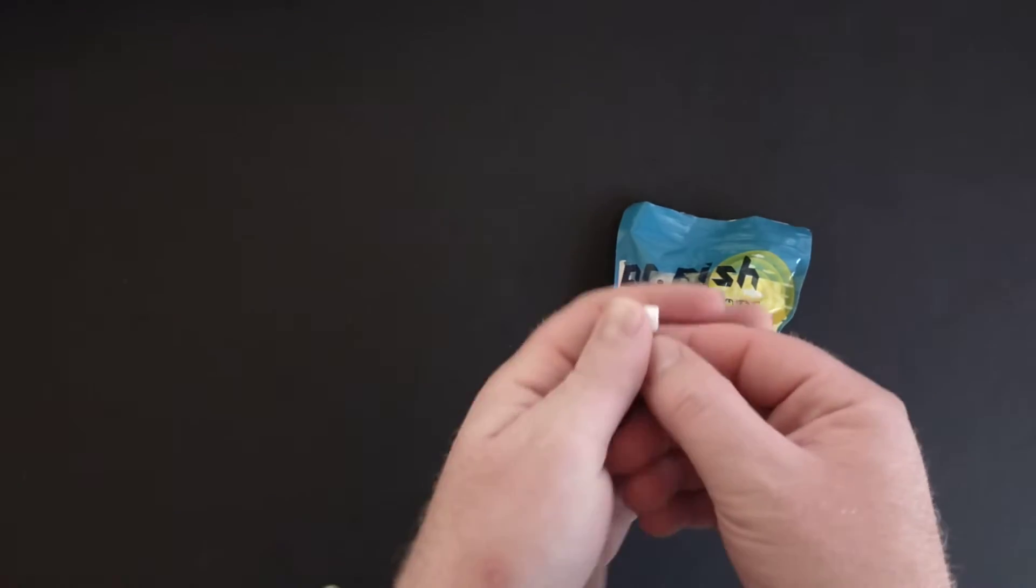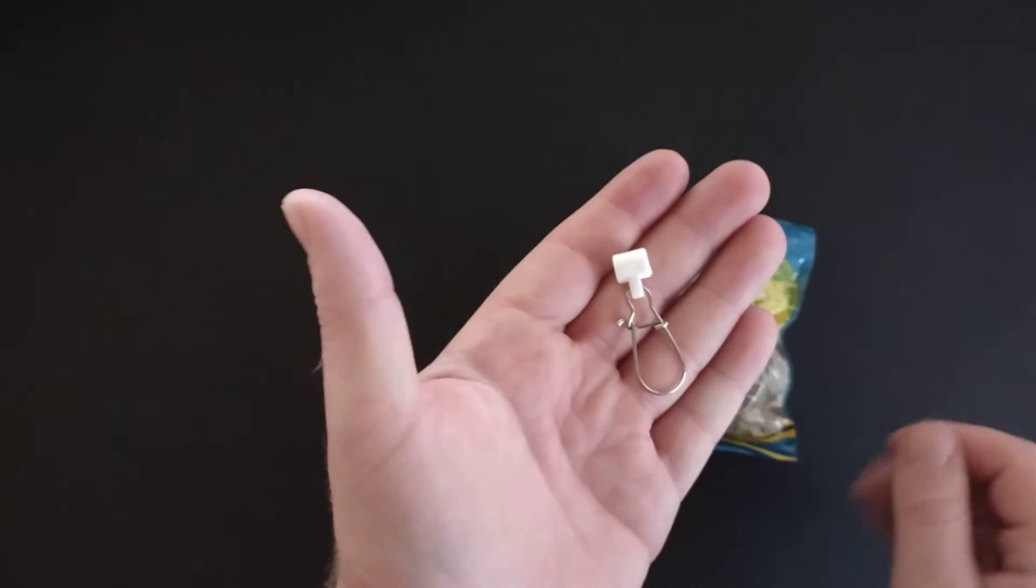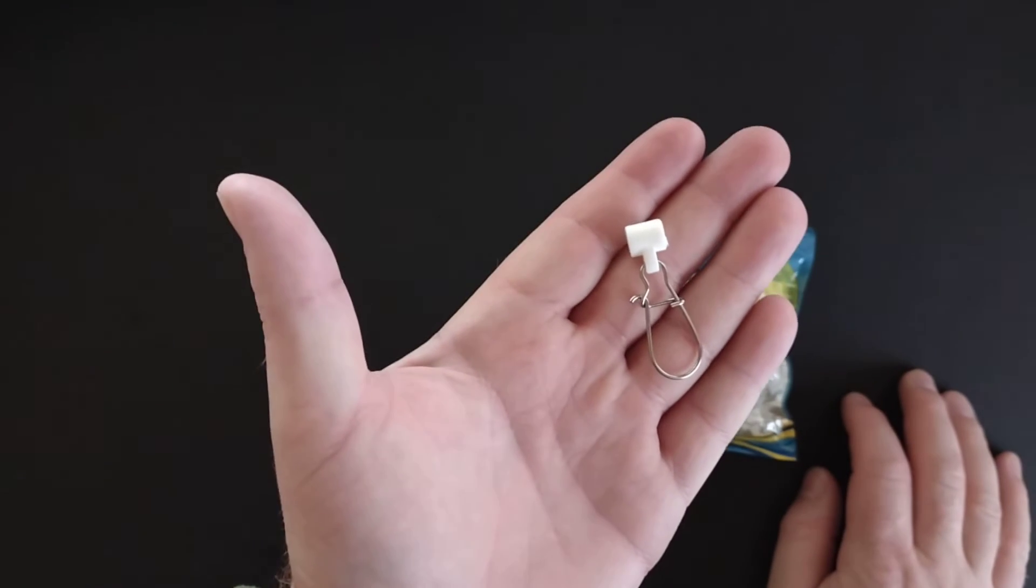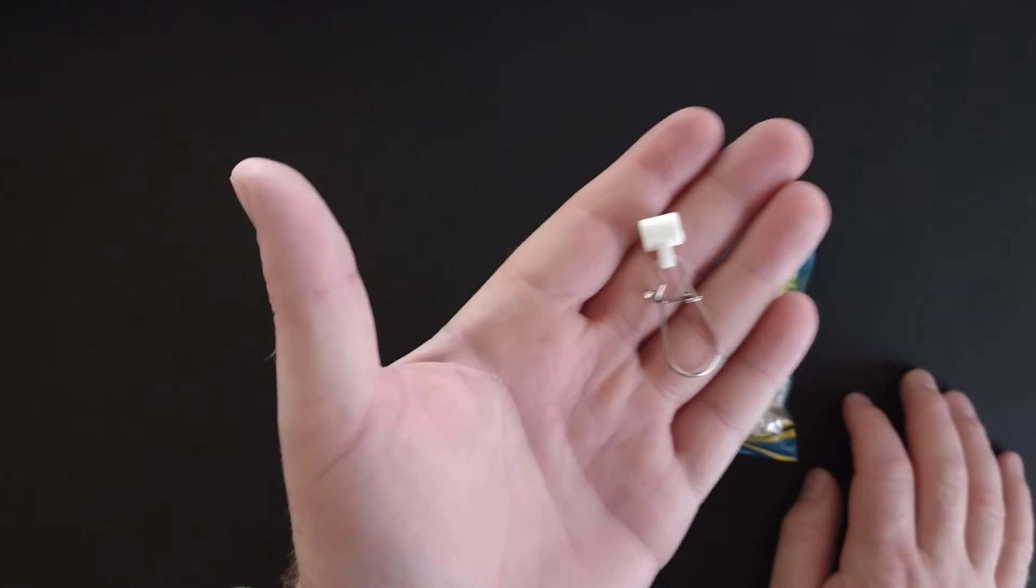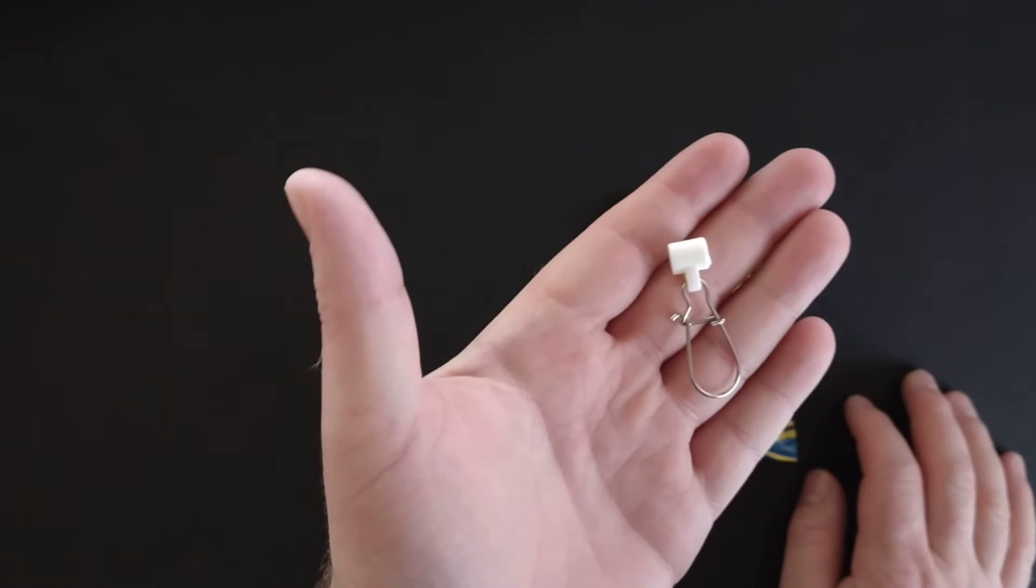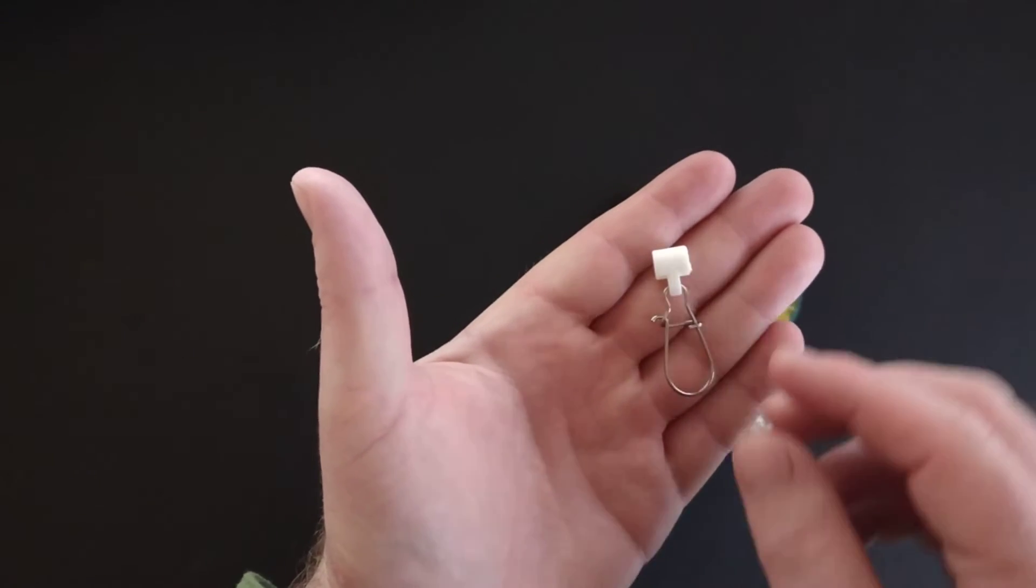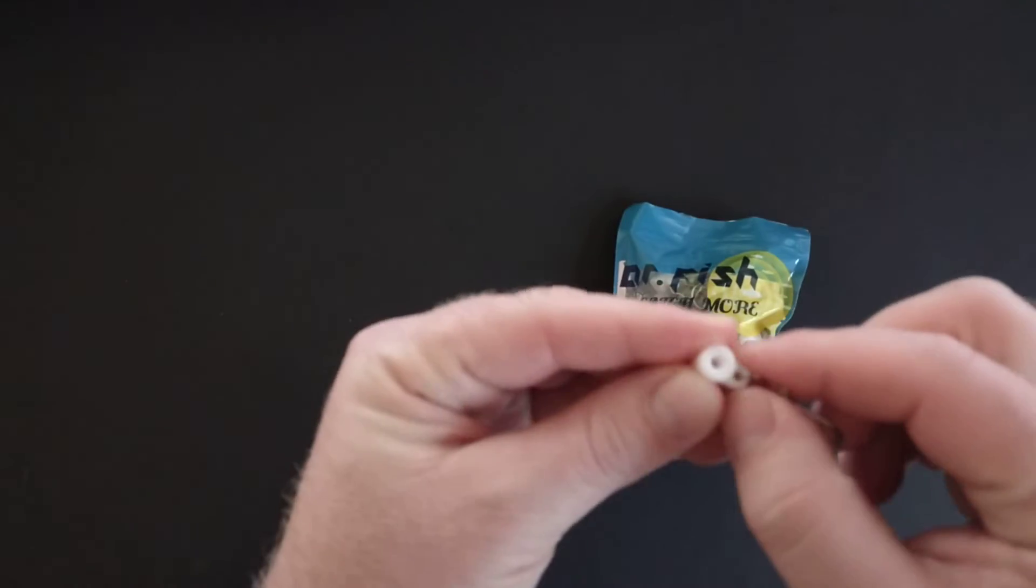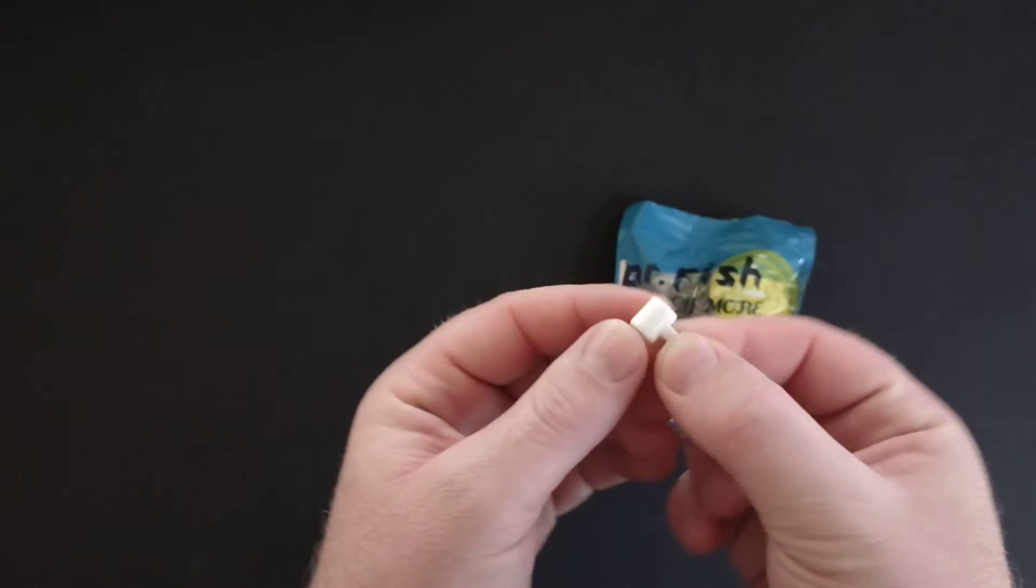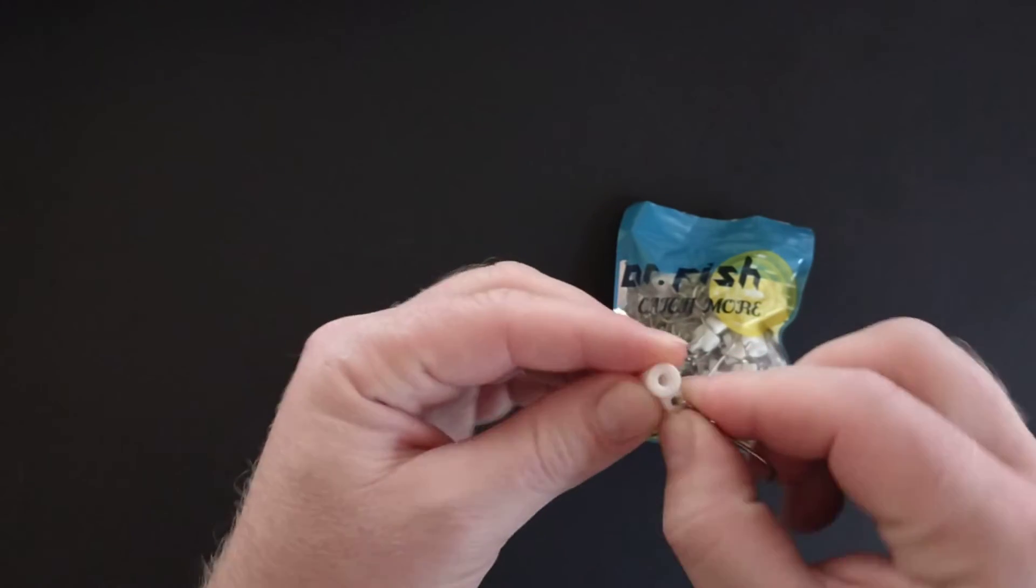So I found these snap swivels. You can get these on Amazon. They're robust. These are my favorite. I've tried a lot of different styles. There's a whole bunch out there that you can pick from. But the reason I decided on these is the robustness of this plastic. This is a really hard plastic clip or slider.